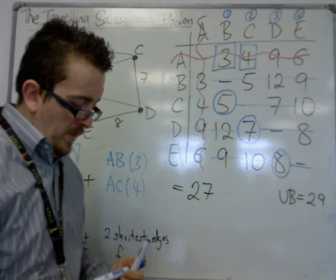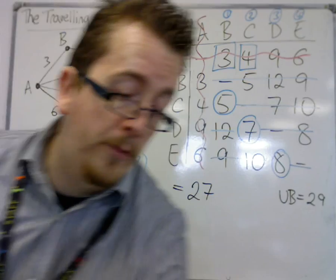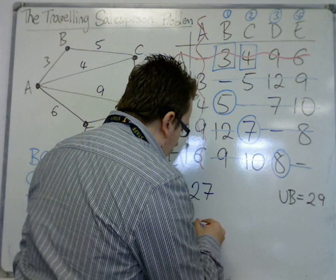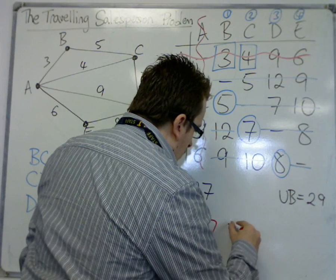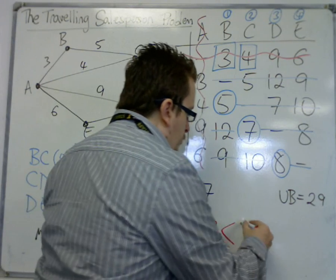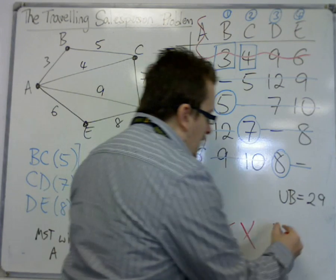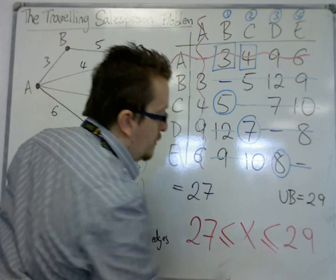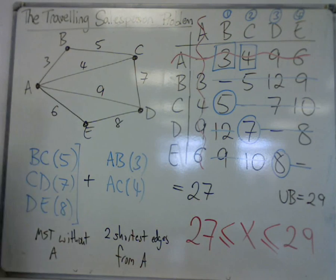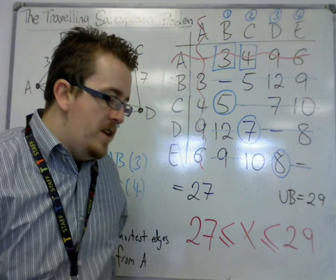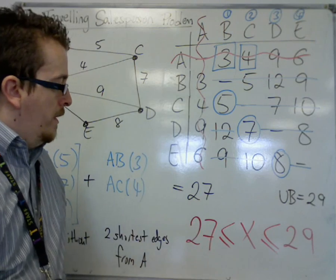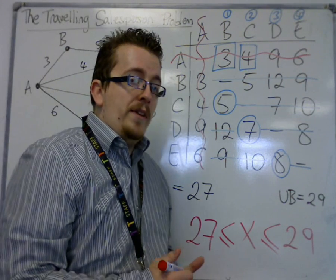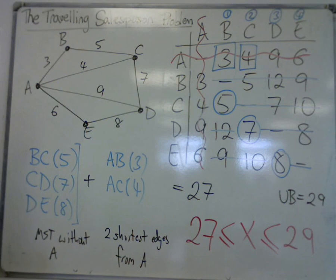So what we can say now is that the optimum solution, the best solution that can be found, is going to be greater than or equal to 27 or less than or equal to 29. So it is somewhere between these two values. The 29 may be improved upon, but we'll certainly never get anything less than 27. And 27 may or may not actually exist.